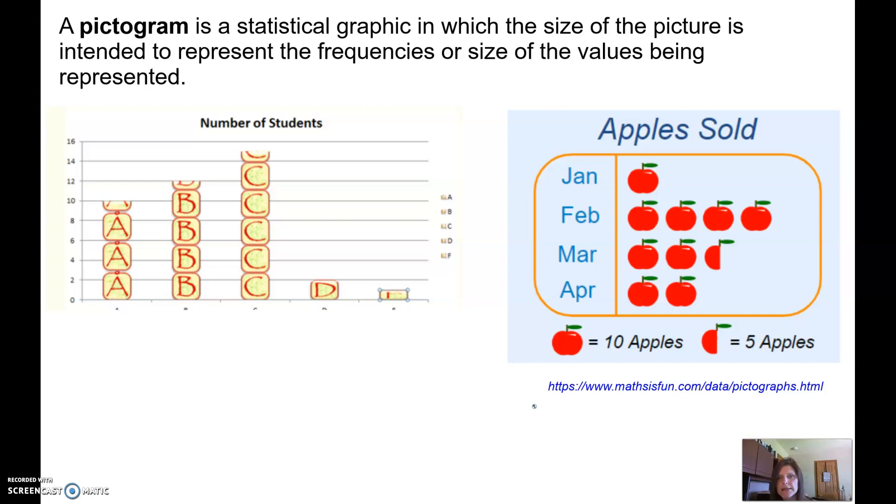The second image though is really a little bit different. Again it still kind of looks like a bar graph but we don't have a frequency axis anywhere on here and it's turned sideways. In this image we're looking at the number of apples sold for various months and we're told that that little apple icon is actually giving me the frequency. A whole apple represents ten, half apple represents five apples.